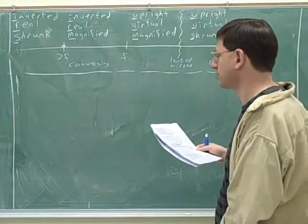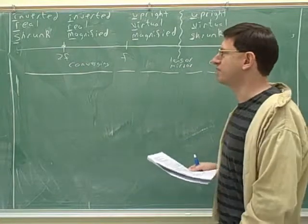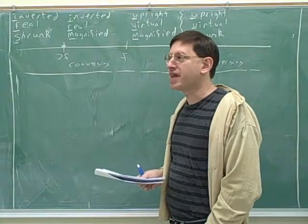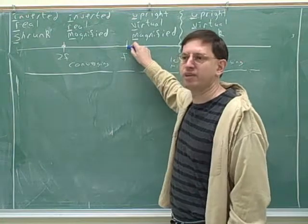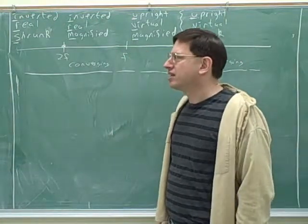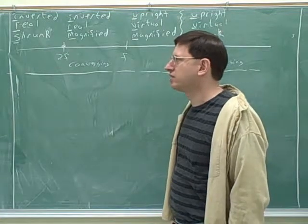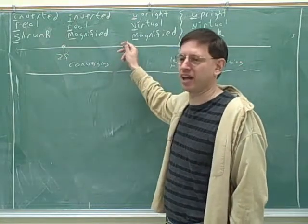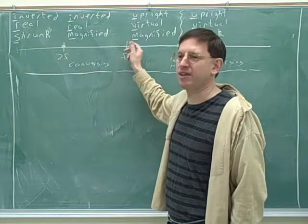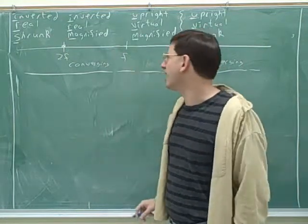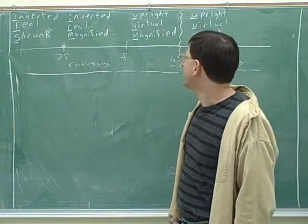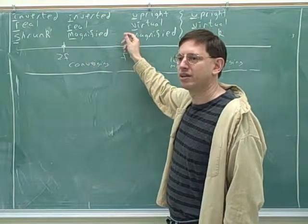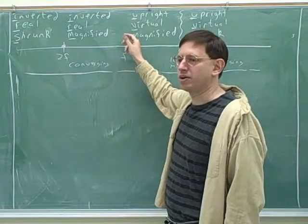So if you're exactly at f, you're in between real and virtual. That would mean the image is neither real nor virtual, but that's not possible — those are the only two cases. So you actually don't get an image if you put the object here. If you had a point object exactly at the focal length, you wouldn't get an image. Any real object spread a little in front of the focal point will still produce some image, but it might be very dim. Notice that this is the very middle of the magnified region — this is the point of infinite magnification.